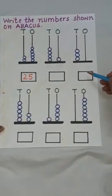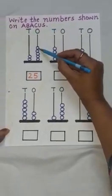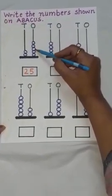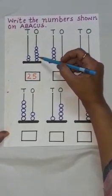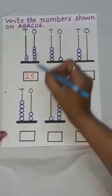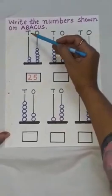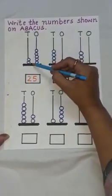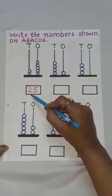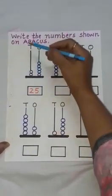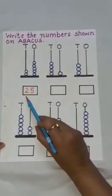First of all, count the number of beads at the ones place: 1, 2, 3, 4, 5. How many beads are there? Yes, 5. So, we will write here 5. Now, count the number of beads at the tens place: 1, 2. So, here we have written 2. So, the number is 2 tens, 5 ones. Number is 25.